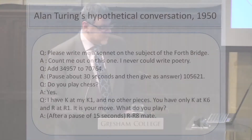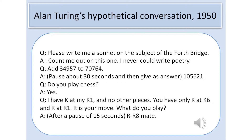Here is a hypothetical conversation from Alan Turing's 1950 paper. 'Please write me a sonnet on the subject of the Forth Bridge.' 'Count me out on this one, I never could write poetry.' 'Add 34,957 to 70,764.' 'Do you play chess?' 'Yes. I have king at my king one and no other pieces. You have only king at king six and rook at rook one. It is your move. What do you play?'